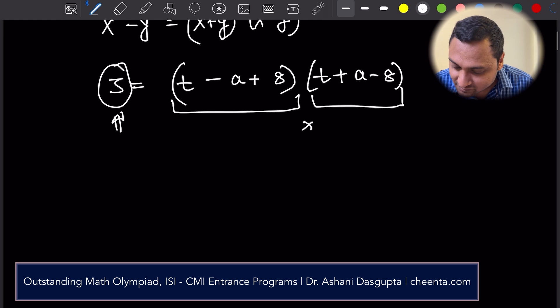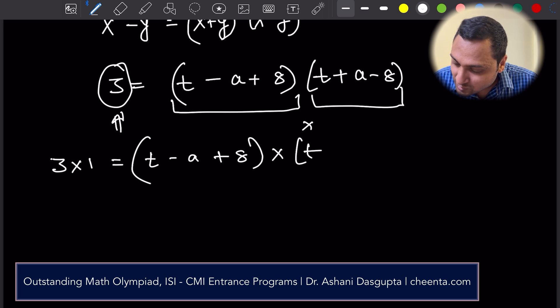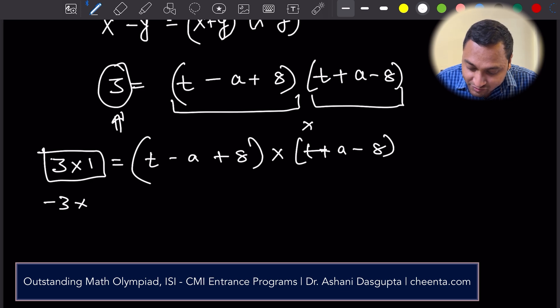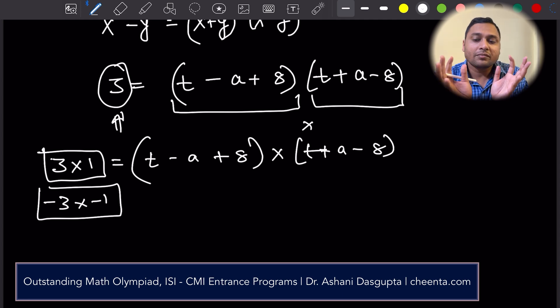3 into 1 is equal to t minus a plus 8 into t plus a minus 8. It's either 3 into 1 or it's minus 3 into minus 1. Those are the only two ways this can happen.